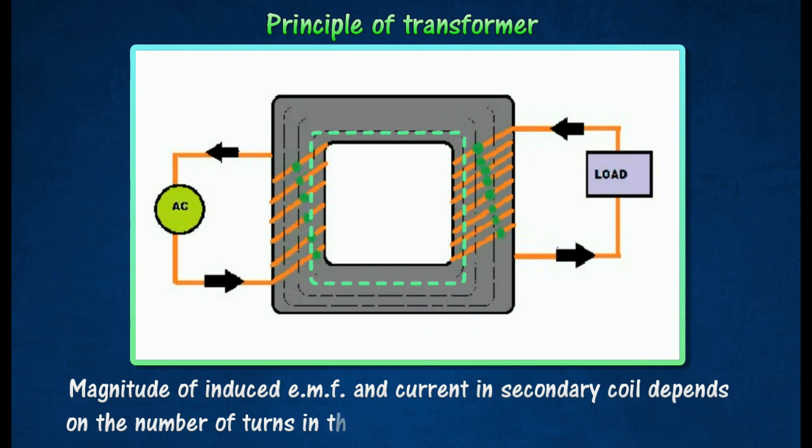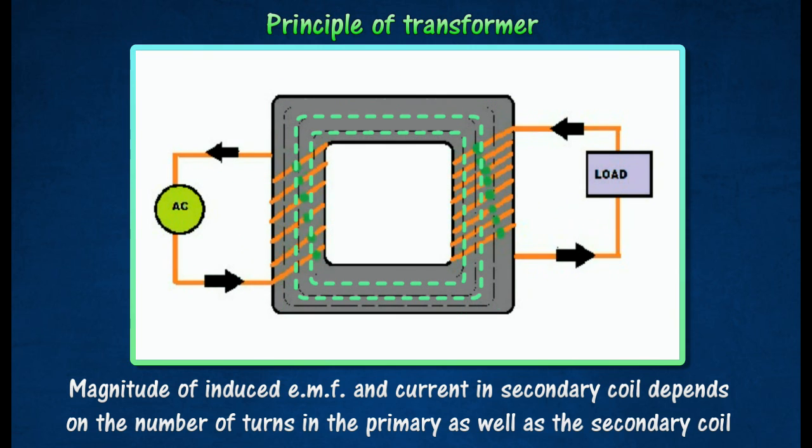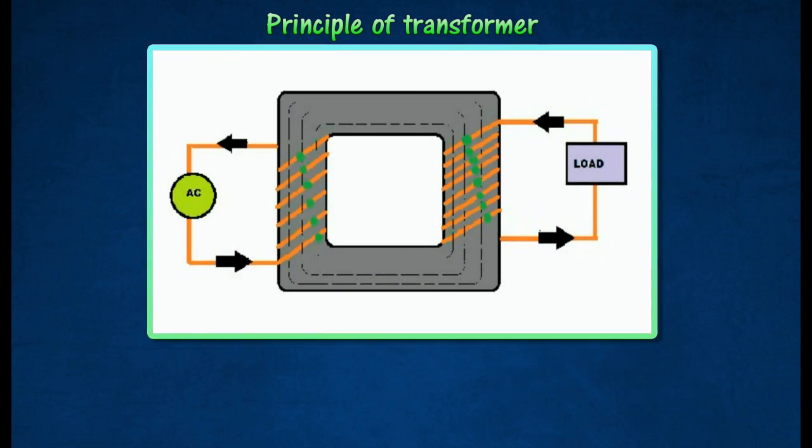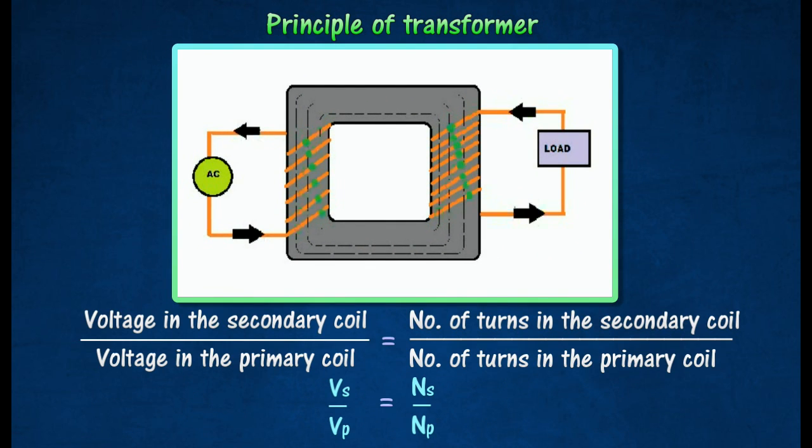The magnitude of the induced electromotive force and current in the secondary coil will depend on the number of turns in the primary as well as the secondary coil. The relationship between the voltage and the number of turns in each coil is given by the transformer equation.